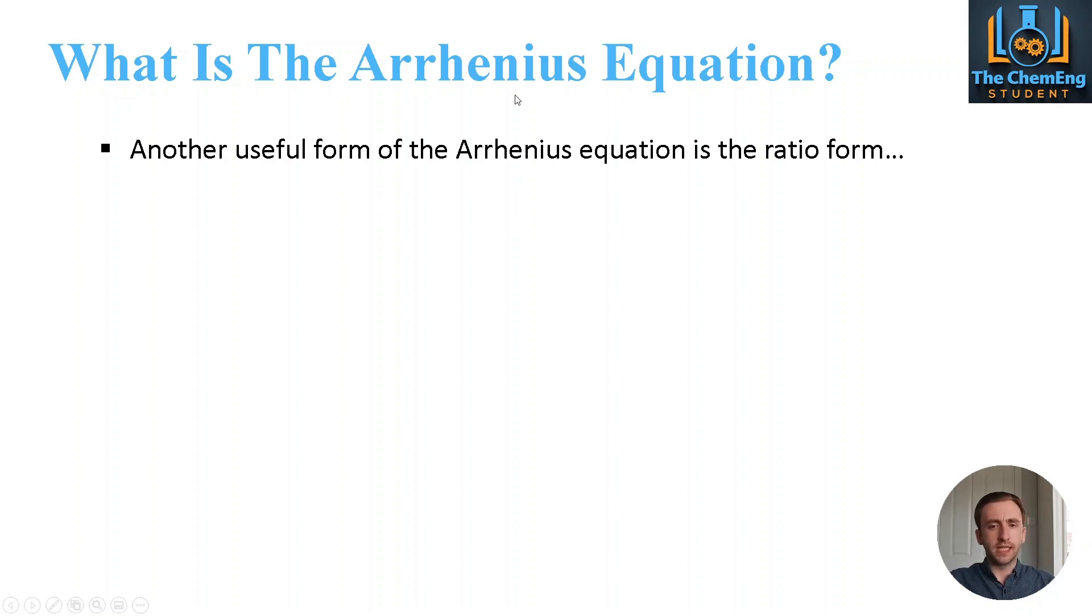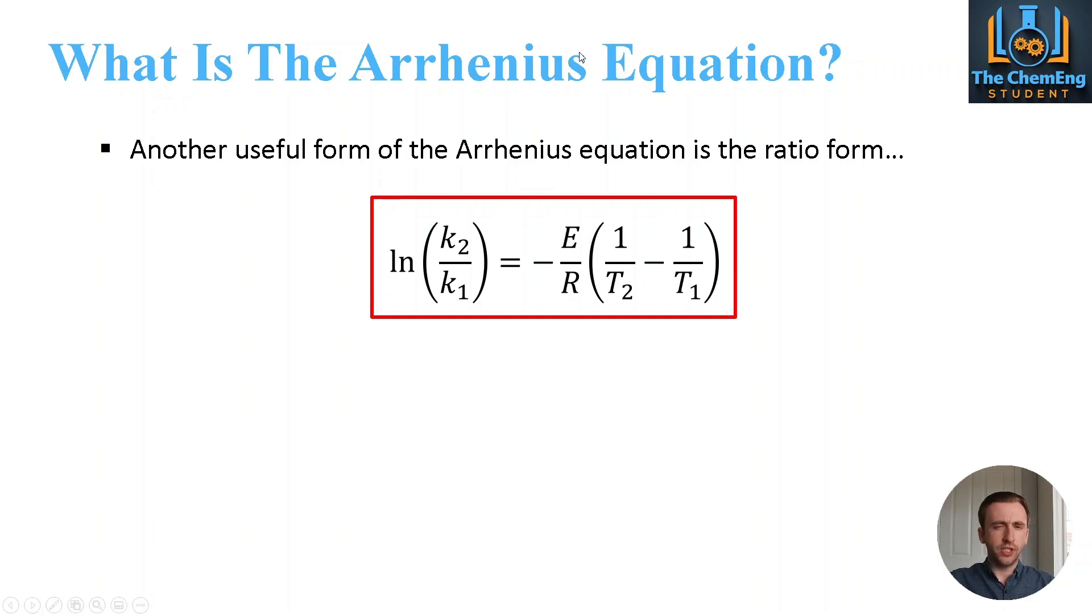Now another form that you can express the Arrhenius equation, and this is very powerful if your information is limited, is in the form of a ratio. So say for example you are provided two different reaction rates at different operating temperatures for the same reaction. So you have a different temperature with a recorded reaction rate, and you wanted to work out what the respective activation energy is. Then you could use this form in order to work out E. And the beauty of this is you don't need to know the frequency factor. Because of the way that this is derived, you don't need to include the ln of A because they actually cancel each other out during the mathematical proof. So this is very powerful if you want to work out either the activation energy, or an unknown temperature, or an unknown rate without the need to have the frequency factor.